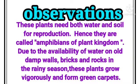These plants need both water and soil for reproduction, hence they are called the amphibians of the plant kingdom. Due to availability of water on damp walls, bricks, and rocks in rainy seasons, these plants grow vigorously and form green carpets.